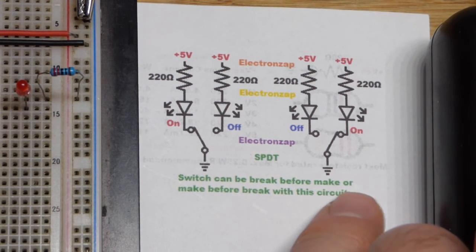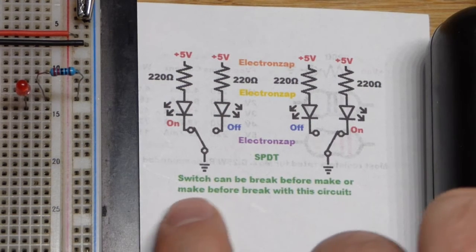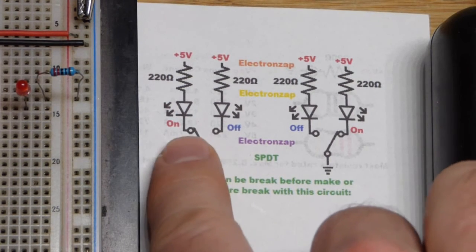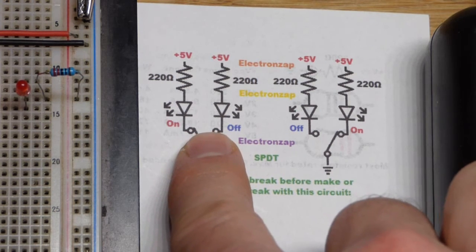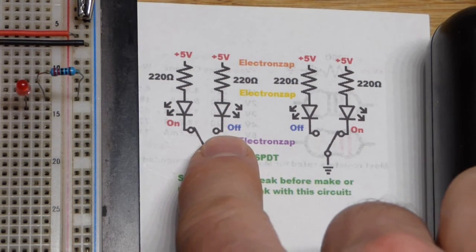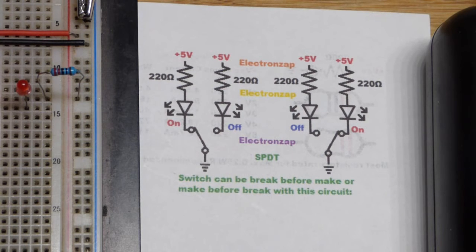So switch can break before make, which is what we got there, or make before break where it is wide enough to touch them both at the same time but then it shifts enough where it only connects to one or the other.